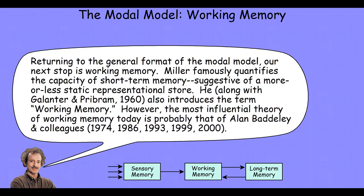Returning to the general format of the modal model, our next stop is going to be working memory. Miller famously quantified the capacity of working memory in the form of short-term memory, when working memory was thought of as a more or less static representational store. He, along with Galantier and Pribram in 1960, also introduced the term working memory. However, the most influential theory of working memory today is probably that of Alan Baddeley and his colleagues. He began his research around 1974 and continues to publish even today. In the next lecture module, we'll look at Baddeley's model of working memory, talking about each of the components and how they interact with each other.